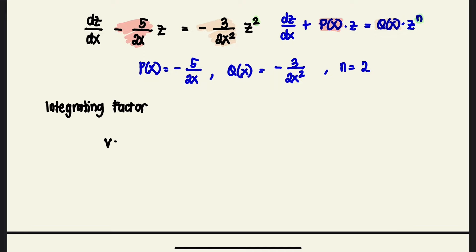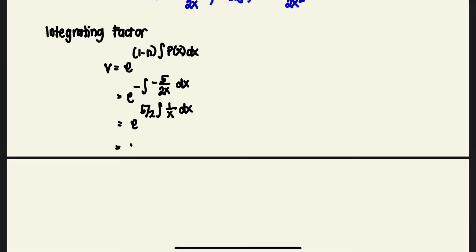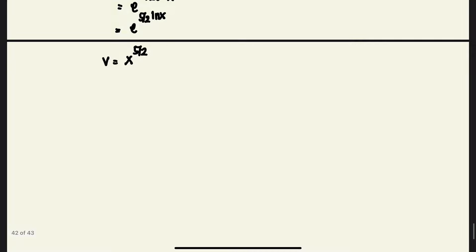The integrating factor v = e^((1−n)∫P(x)dx). With n = 2, that gives e^(−∫5/(2x) dx) = e^((5/2)∫(1/x)dx). Therefore v = x^(5/2), which is our integrating factor.